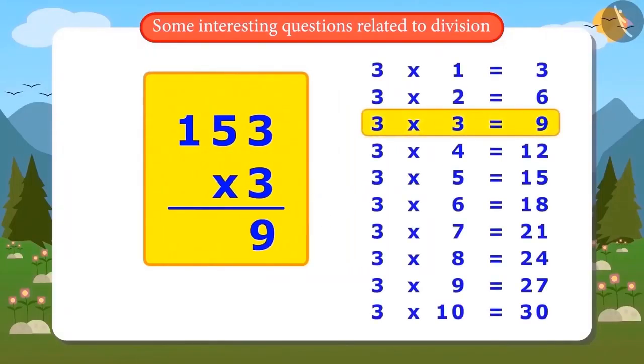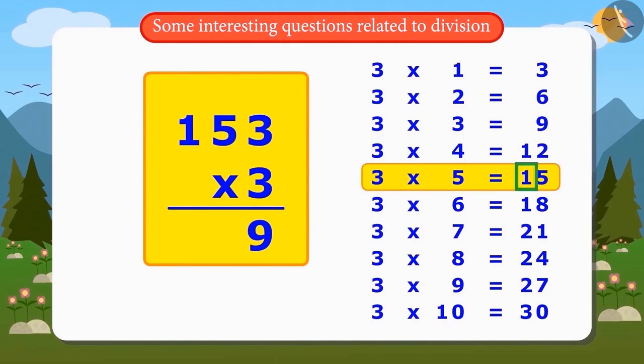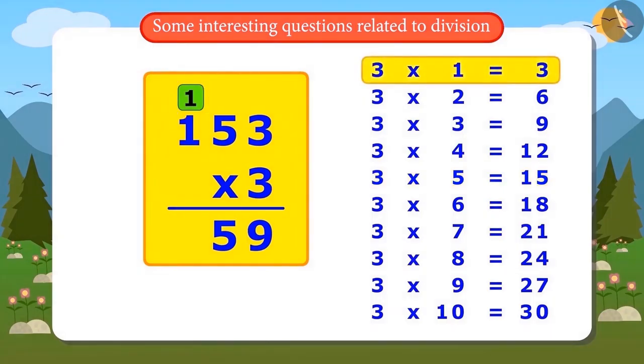3 times 3 is 9. 3 times 5 is 15. So, at 1's place is 5 and at 10's place is 1. So, while multiplying, we keep 1's digit at its designated place, and we keep the digit at 10's place here. It will be written like this. 3 times 1 is 3.